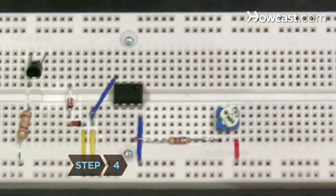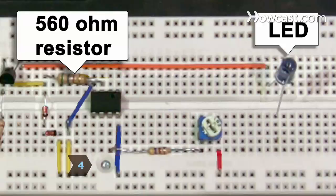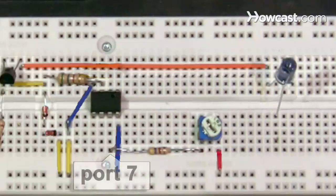Step 4: Connect the transistor to the outgoing side of the second diode, the 560-ohm resistor, and the positive terminal of one infrared LED. Connect the 470-ohm resistor to port 7 of the timer and the 1K resistor.